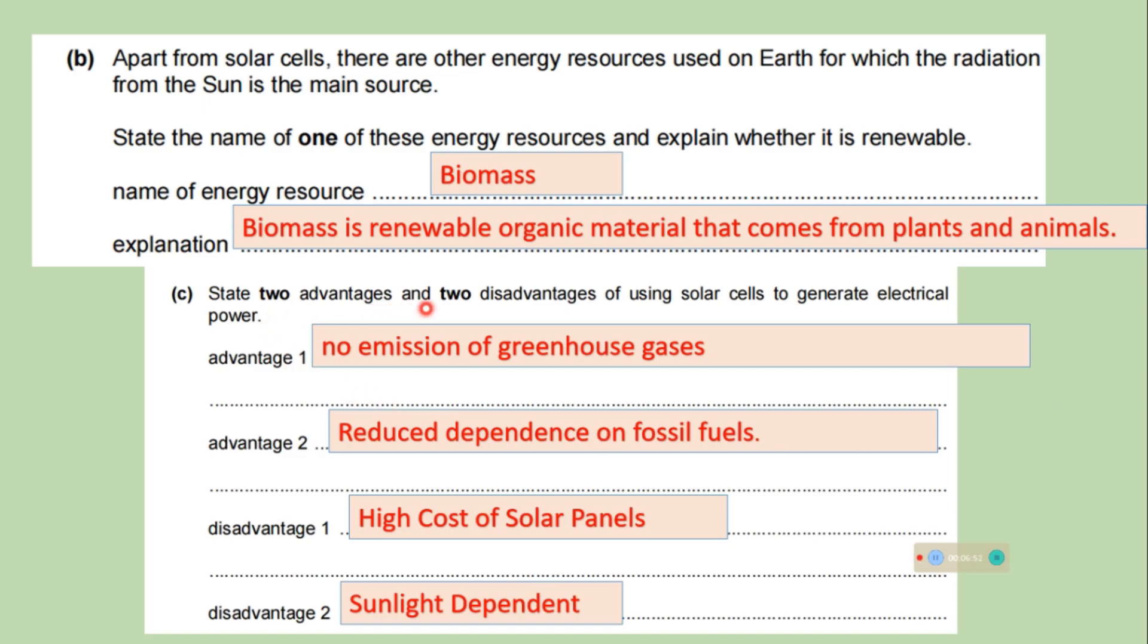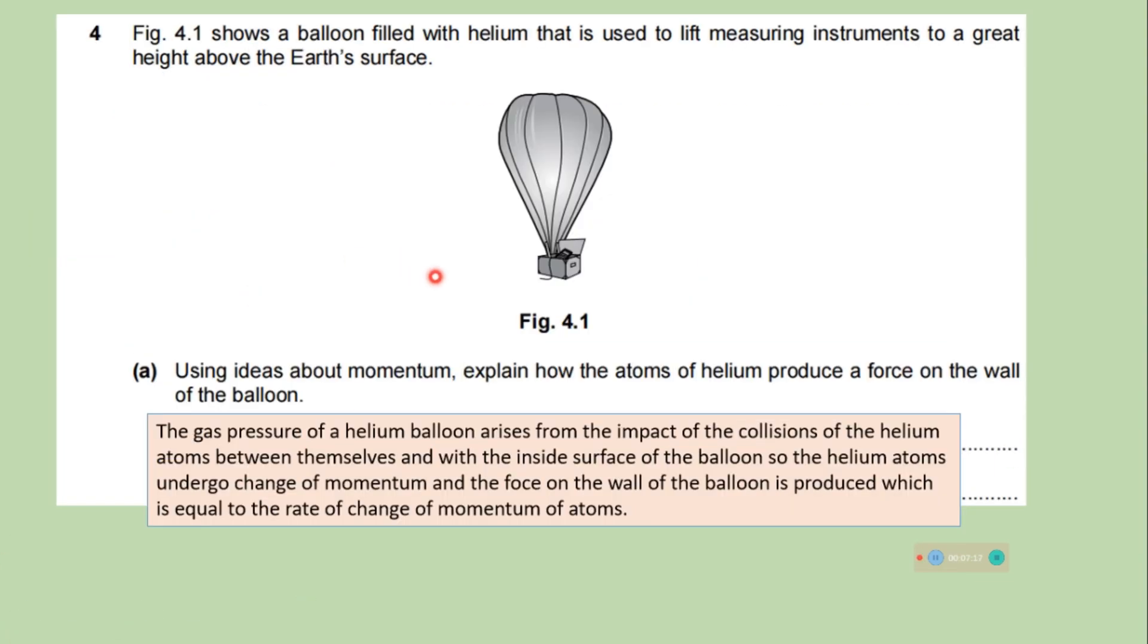State two advantages and two disadvantages of using solar cells to generate electrical power. So advantage one, we can write no emission of greenhouse gases. And advantage two, reduce dependence on fossil fuels. For disadvantage, we can write high cost of solar panels. And another disadvantage is sunlight dependent.